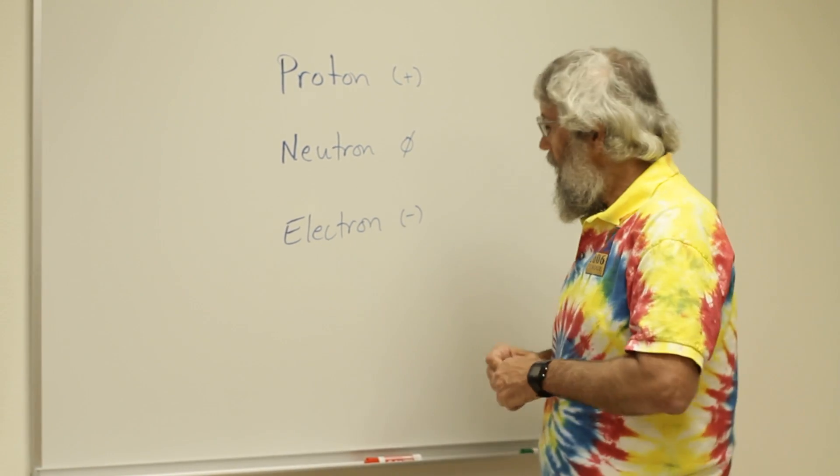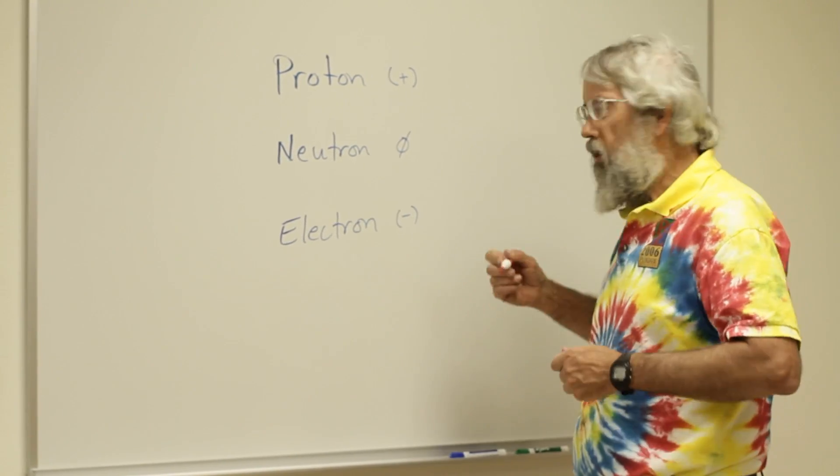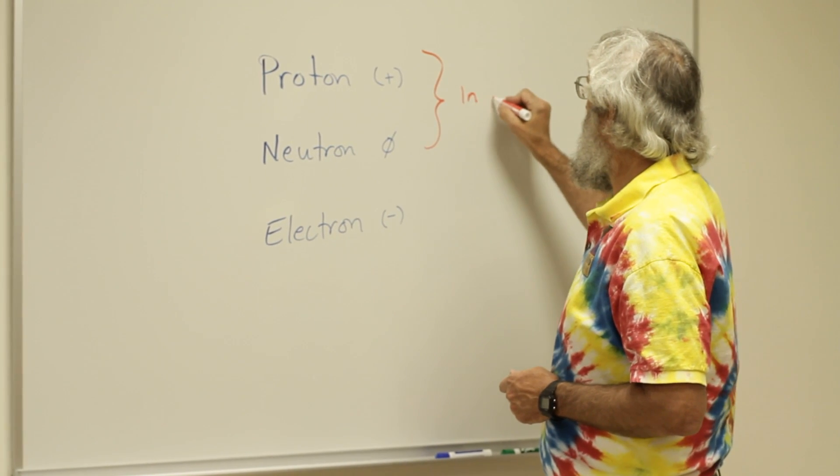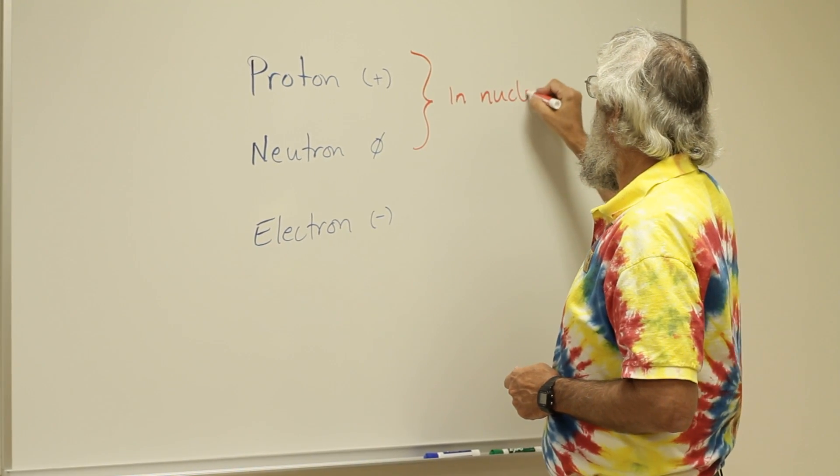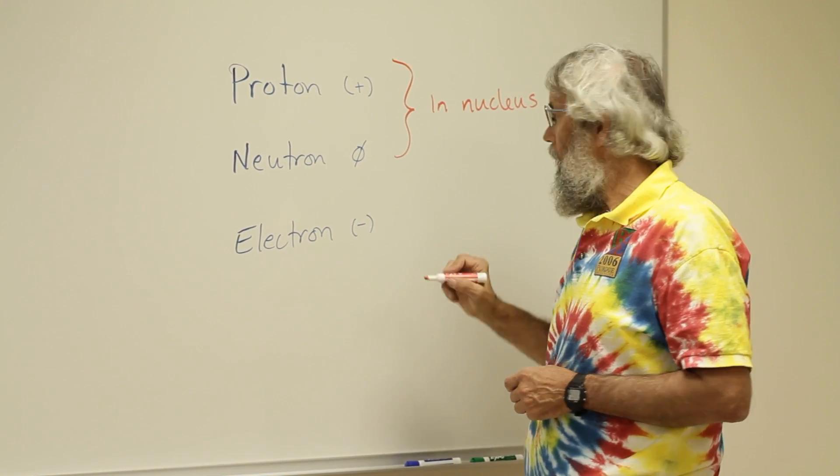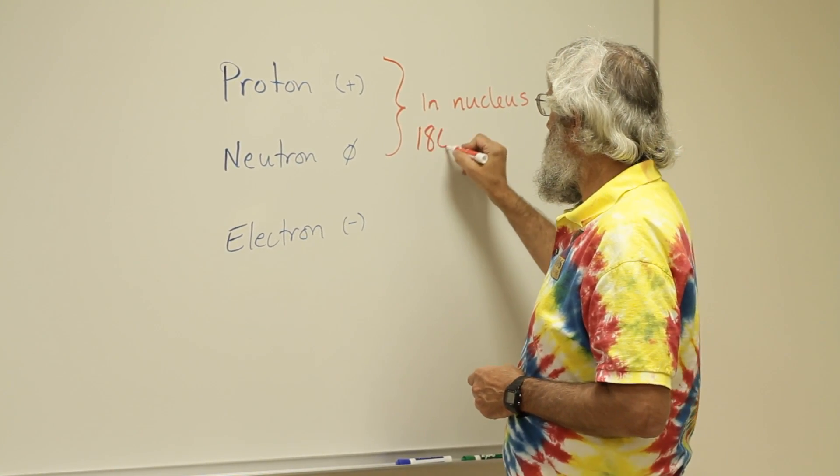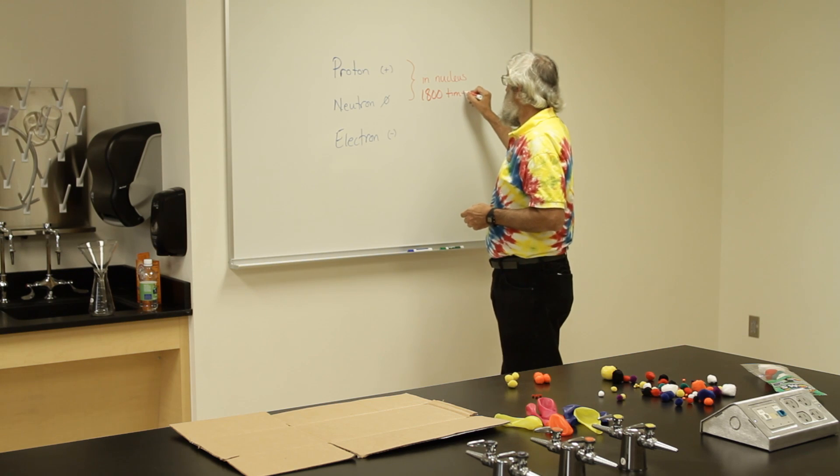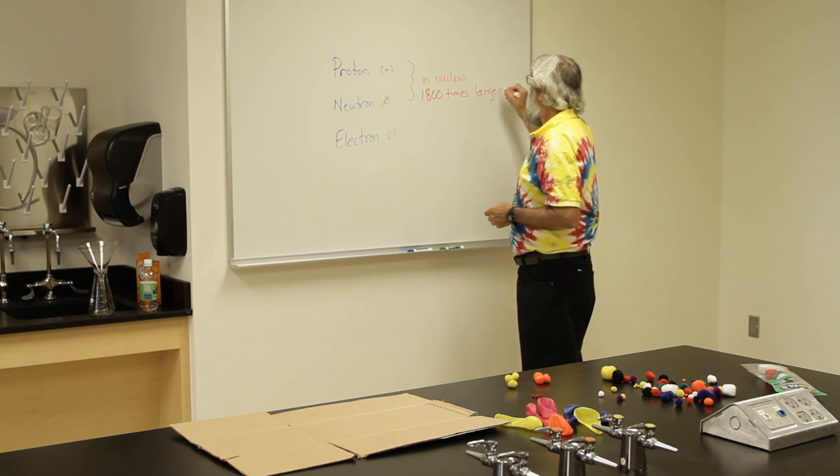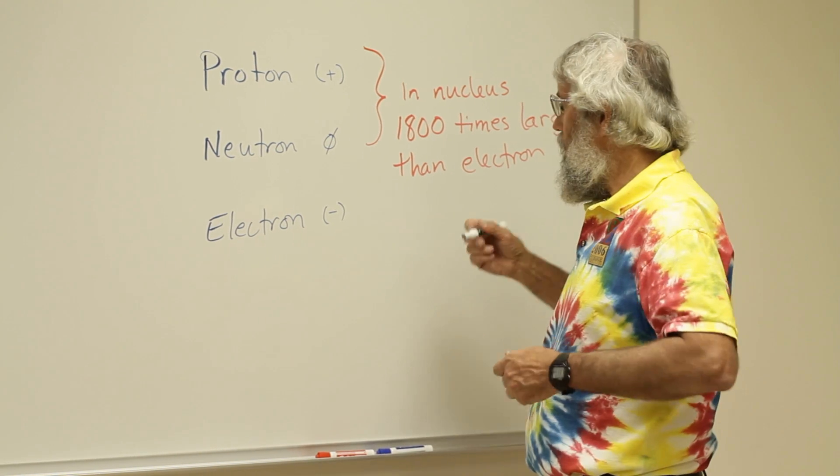The proton and neutron are located within the nucleus of an atom. And they are much larger than an electron. In fact, 1,800 times larger than the electron. The electrons are very small and surround the nucleus in what are called orbitals.